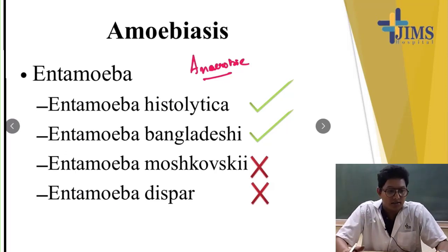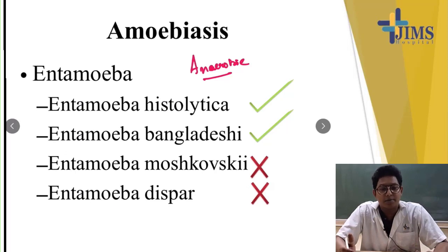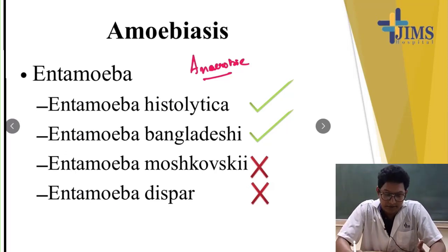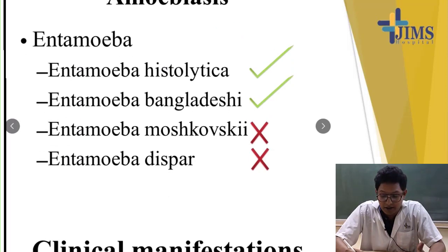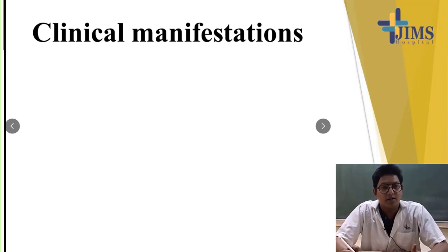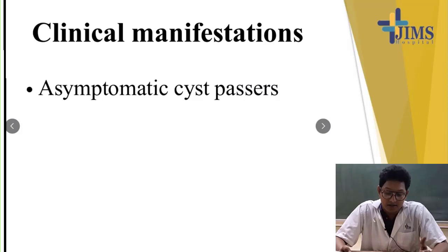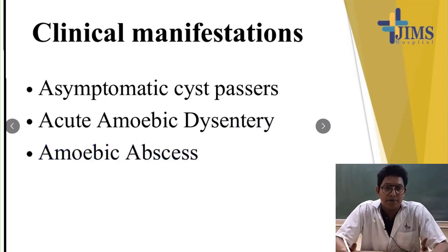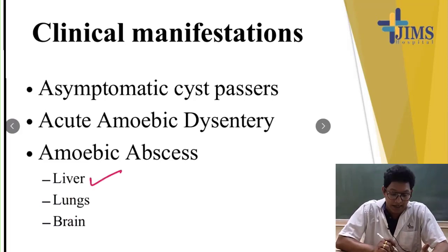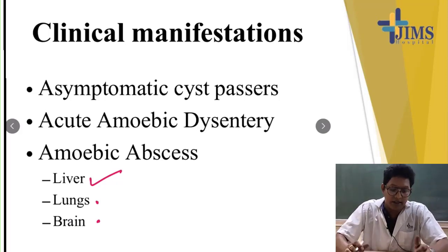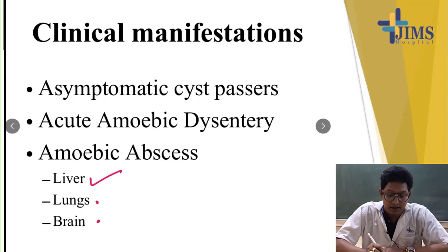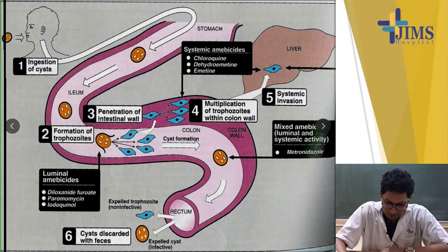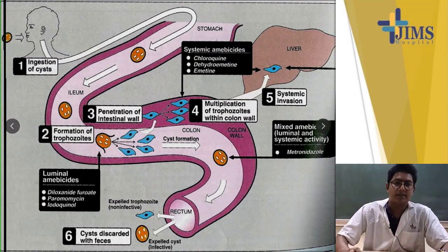Two main factors — poor socioeconomic status and poor environmental sanitation — play important roles in the spread of this disease. This disease generally spreads by the feco-oral route and can present with a variety of clinical manifestations: asymptomatic cyst passage, acute amoebic dysentery, or amoebic abscess, most commonly in the liver and rarely in the lungs and the brain.